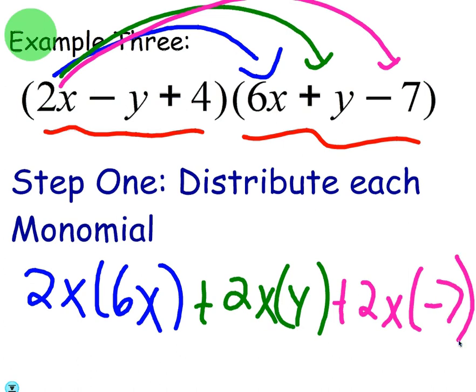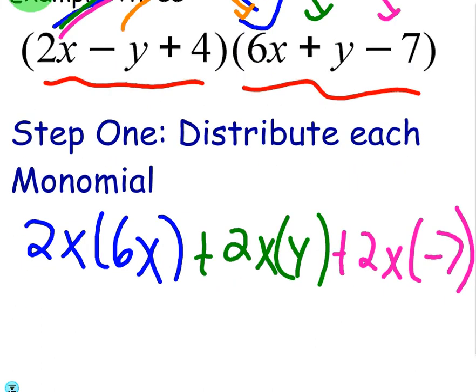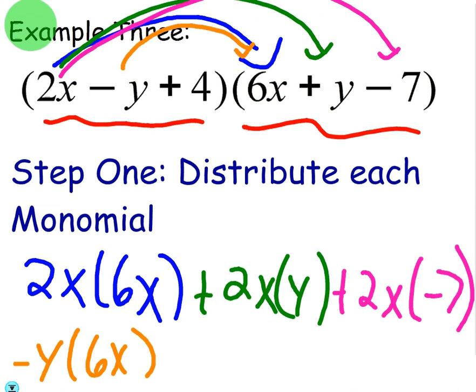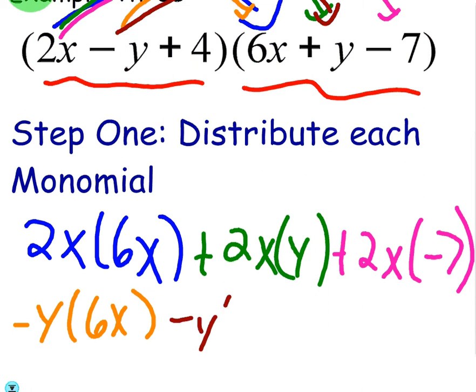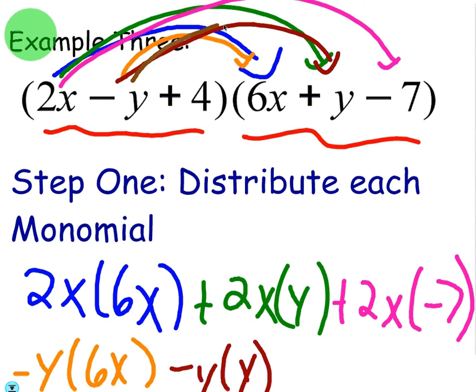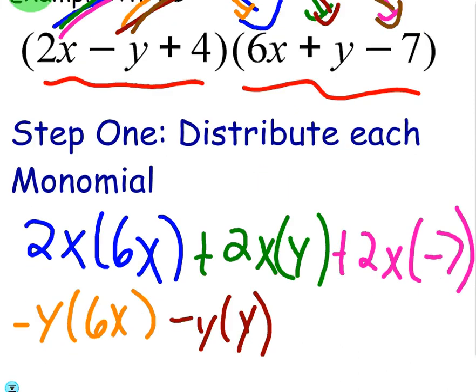Now you're done with the 2x term, you can move on to the minus y. So you're going to take the minus y and distribute to the 6x. Then you're going to take the minus y and distribute to the positive y. Then you're going to take the minus y and distribute to the minus 7. Very good.